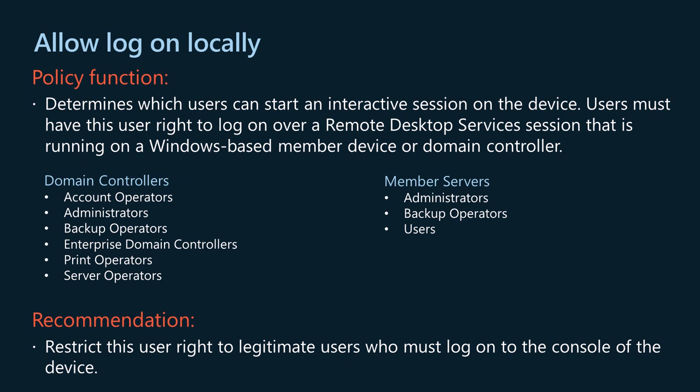The allow log on locally policy determines which users can start an interactive session on the device. Users must have this user right to log on over a Remote Desktop Services session running on a Windows-based member device or domain controller. By default, administrators, backup operators, and users have this right on workstations and servers. On domain controllers, account operators, administrators, backup operators, enterprise domain controllers, print operators, and server operators have this right. You should restrict this user right to legitimate users who must log on to the console of the device. Selectively removing default groups can limit the abilities of users assigned to specific administrative roles.